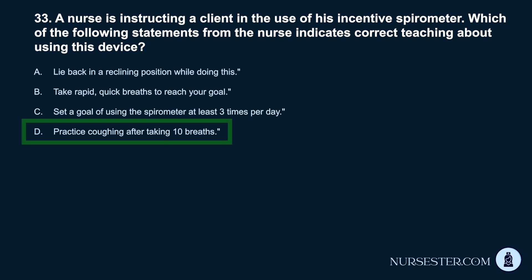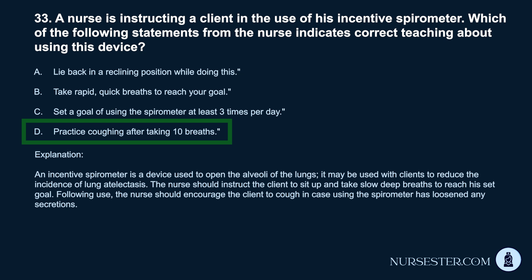Correct answer: D. Practice coughing after taking 10 breaths. An incentive spirometer is a device used to open the alveoli of the lungs and may be used to reduce the incidence of lung atelectasis. The nurse should instruct the client to sit up and take slow, deep breaths to reach his set goal. Following use, the nurse should encourage the client to cough in case using the spirometer has loosened any secretions.